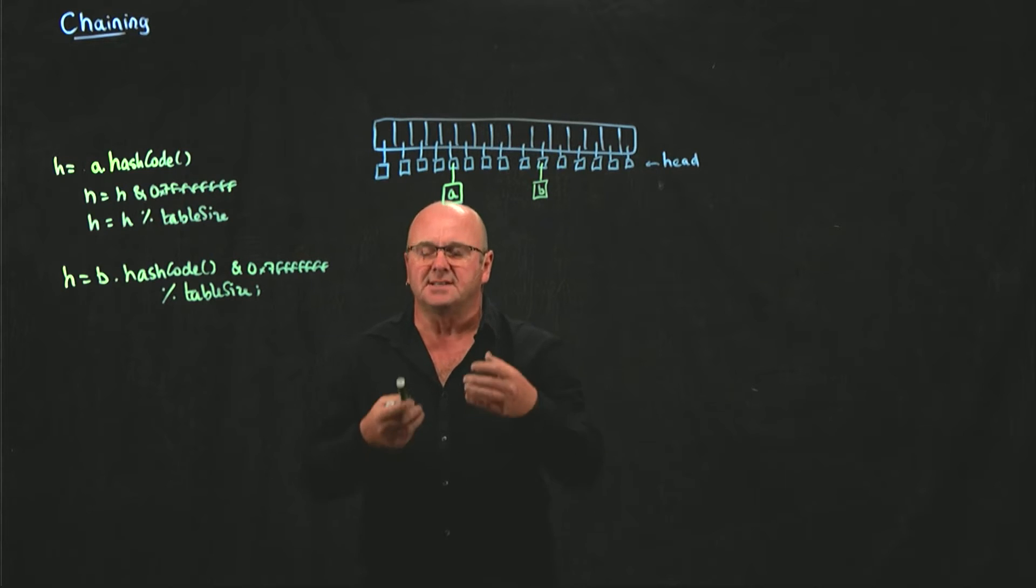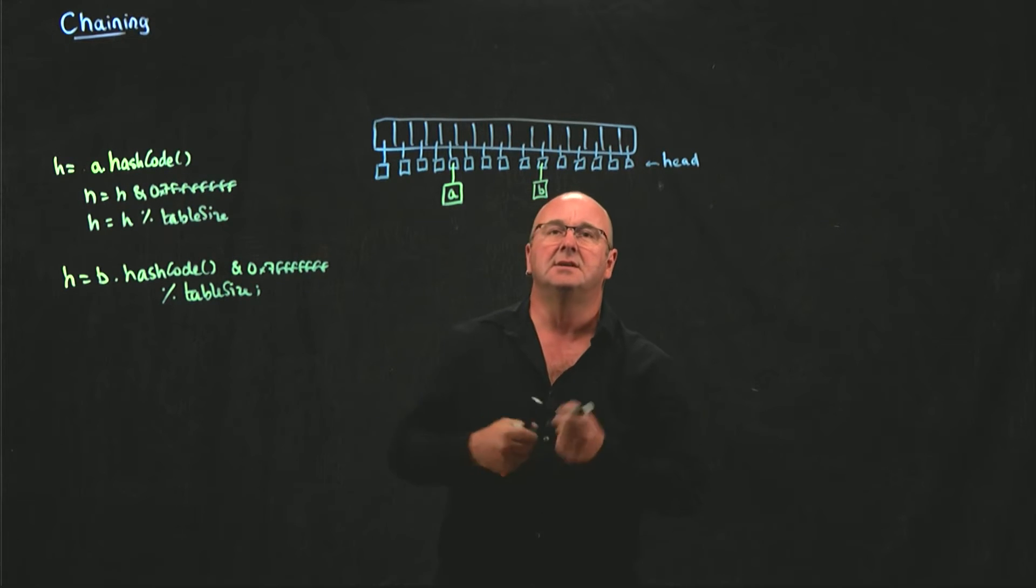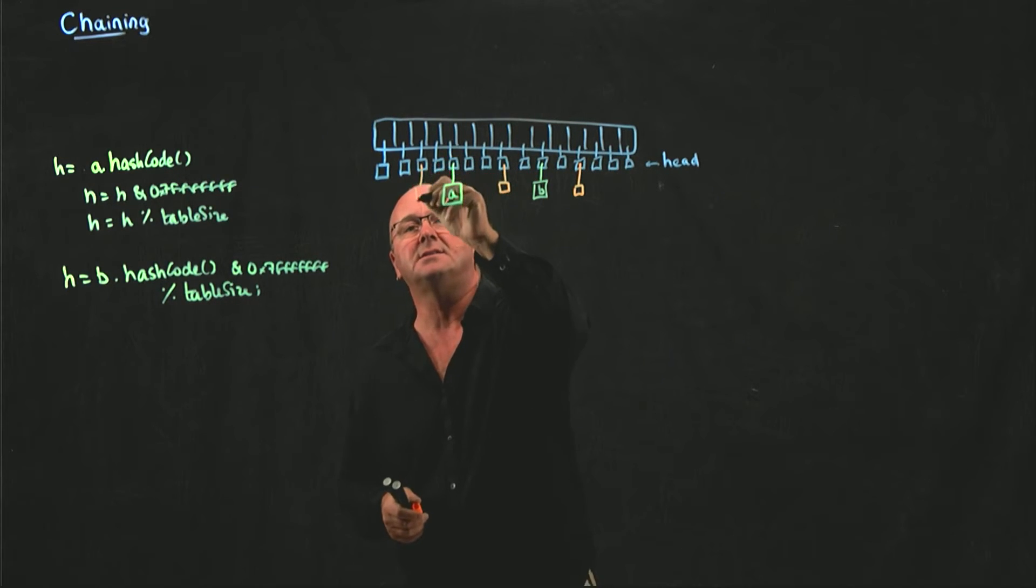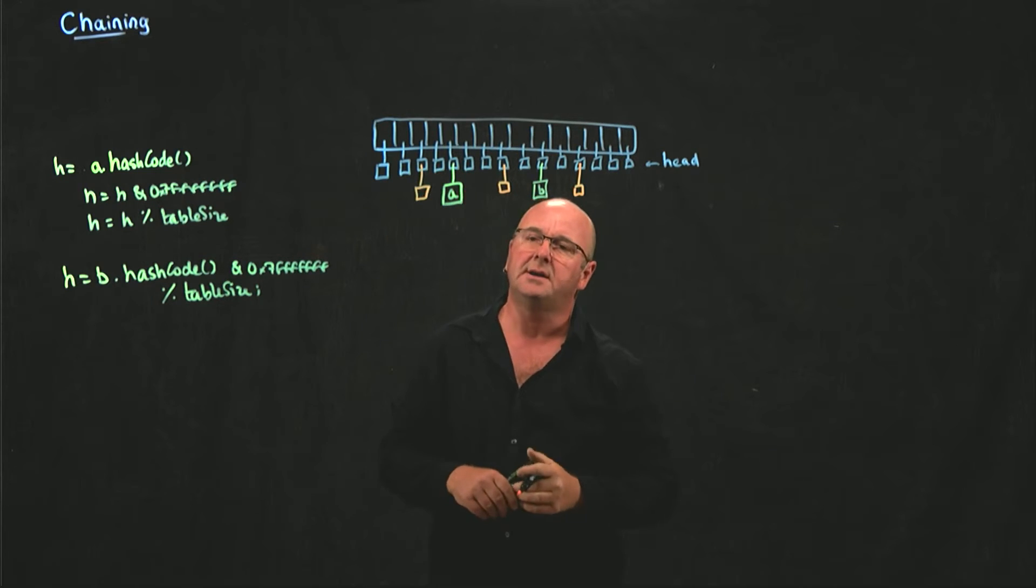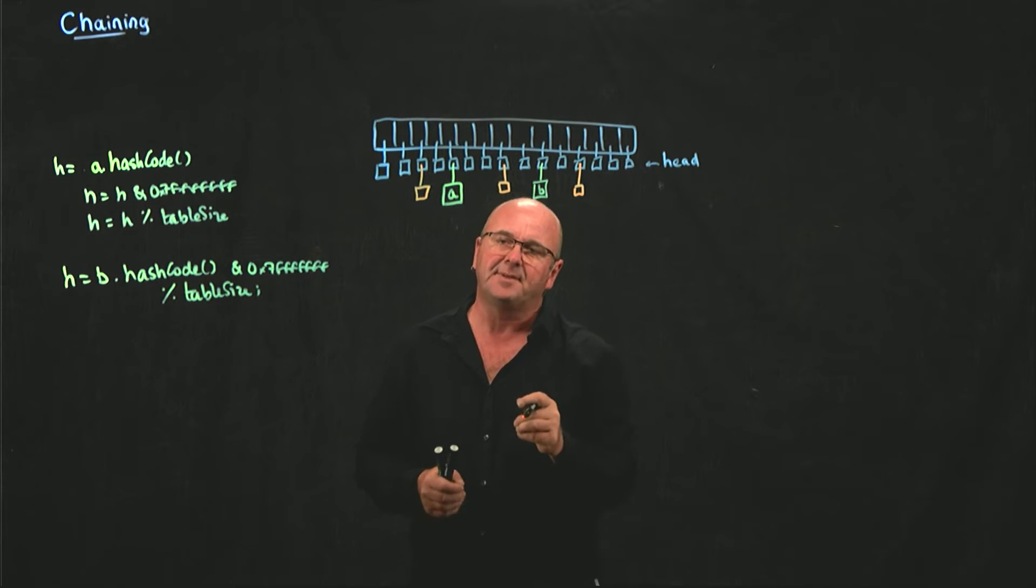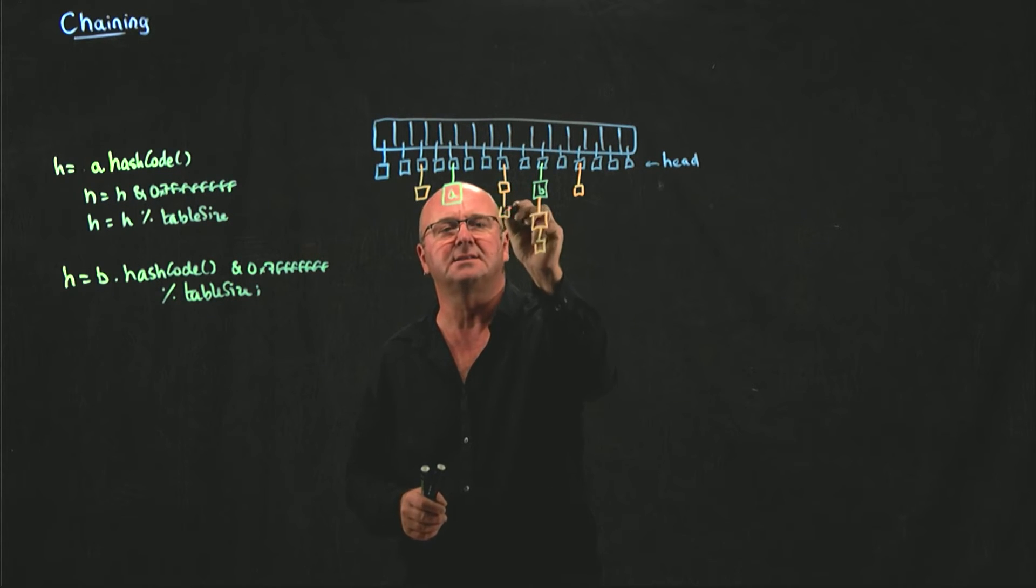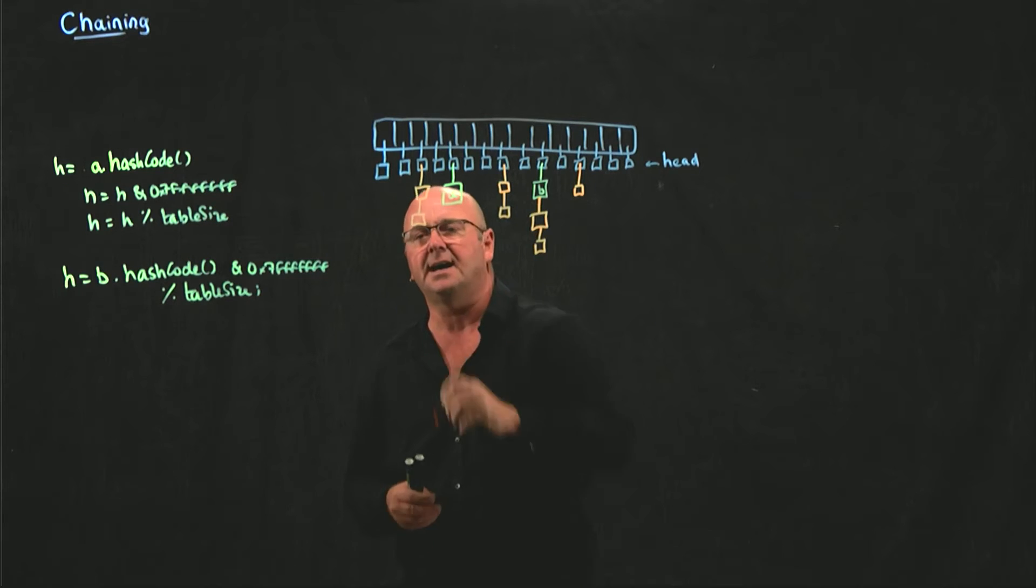What happens is, as I start adding elements, my chains start growing. So if I add things, my linked lists start getting occupied. But if I add something to a space where there's already an element, it doesn't matter. I just add it to the linked list. And so I can keep growing my linked lists by just calling the add method.